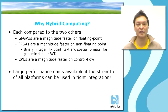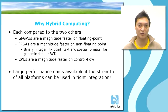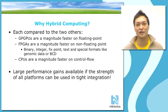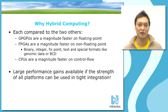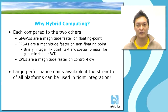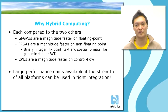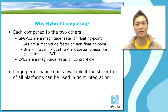CPUs are also the main device for sequential execution, because the main difference between accelerators and classic CPUs is parallelism. However, with the advent of many-core CPUs, CPUs are now going parallel as well. The main point of heterogeneous computing is that you can achieve very large performance gains if you can get the strengths of all the different platforms used in tight integration.